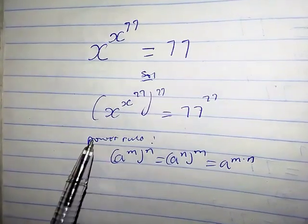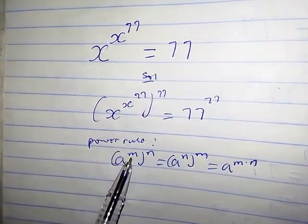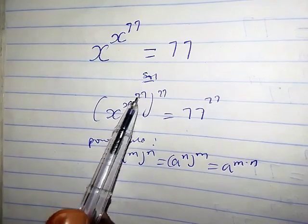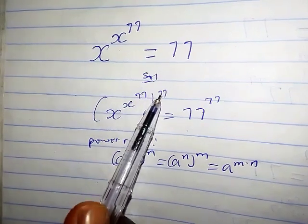So in this case, by comparison, a is x, our m is x raised by 77, and our n is 77.